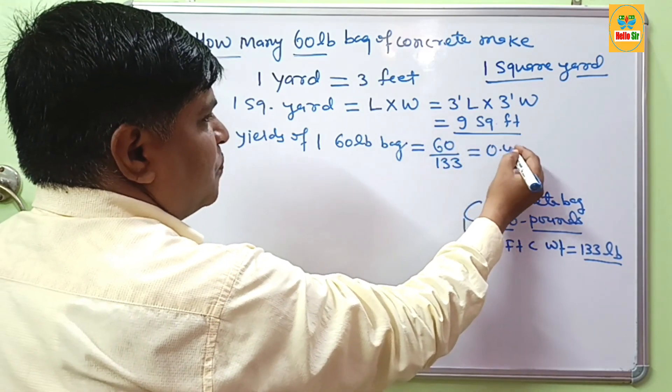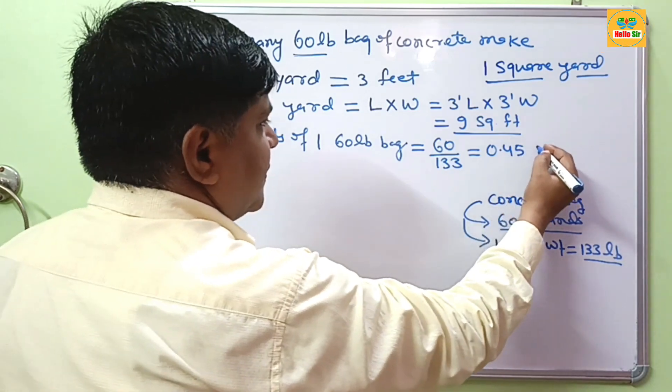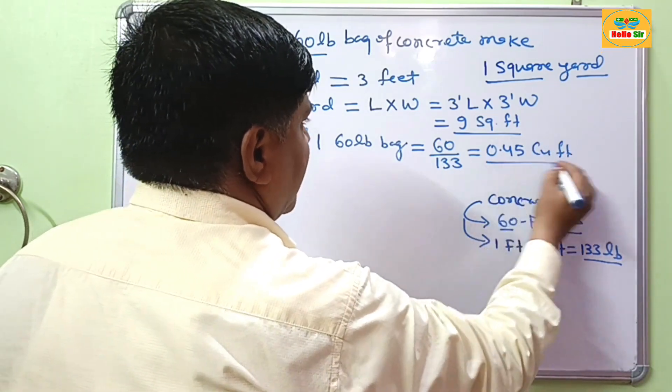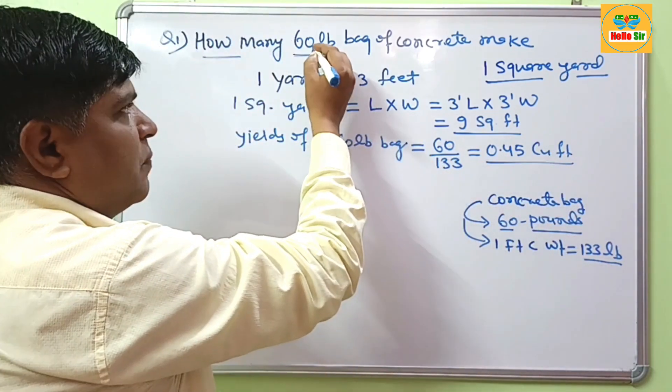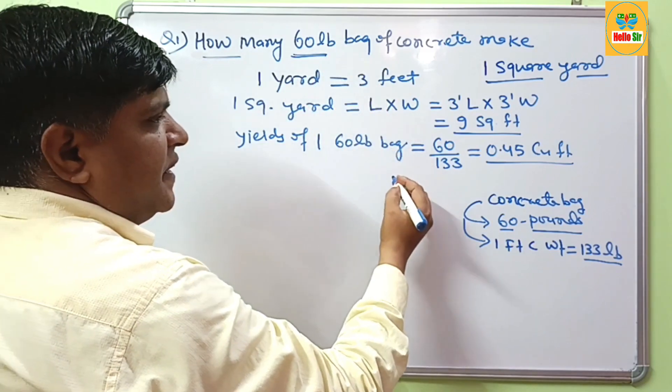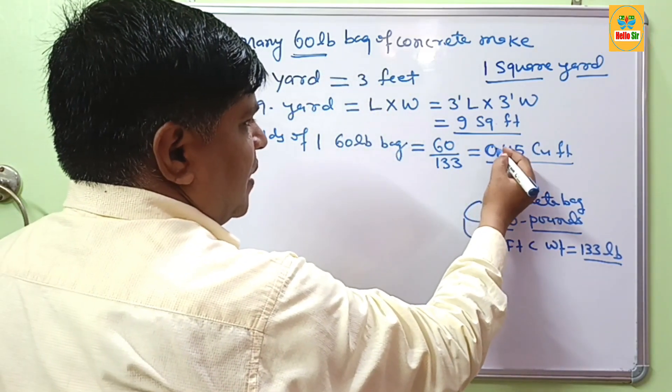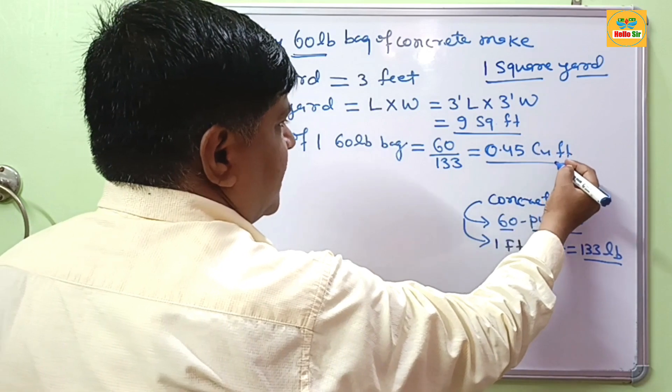This will come about 0.45 cubic feet. It means how many cubic feet does 1 bag of 60 pound concrete yield? It yields volume about 0.45 cubic feet.